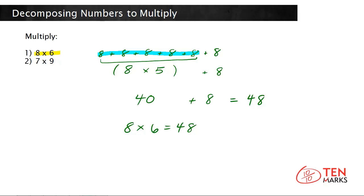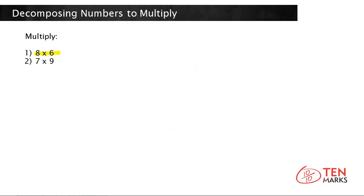Now there's another way to solve 8 times 6 by decomposing numbers and it relies on the distributive property. Let me show you that method. Now remember the distributive property lets you break down one of the factors into the sum of two smaller numbers. So let's break down the number 6. 6 equals 5 plus 1.